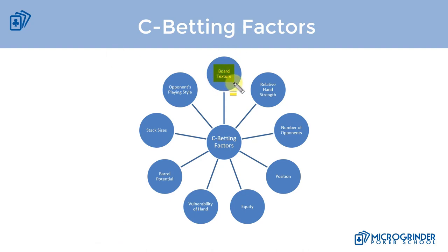The first thing I want to talk about is board texture — something I've discussed in the post-flop fundamentals course and many of my other courses. When we think about our basic c-betting strategy, we c-bet our good drawing hands as a semi-bluff, our strong value hands for value, we check back our medium strength hands as bluff catchers, and we check back our weakest hands. Applying those principles to wet or dry board textures helps us determine what type of hand we have.